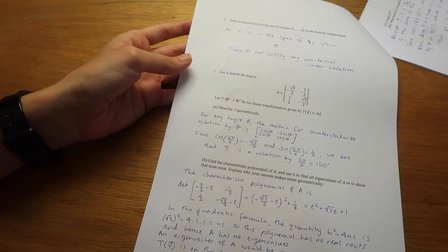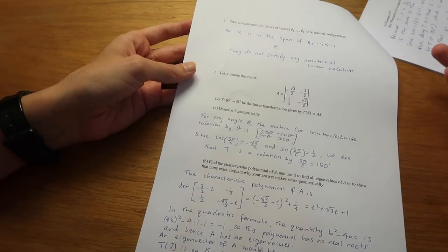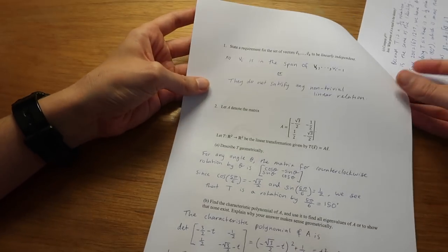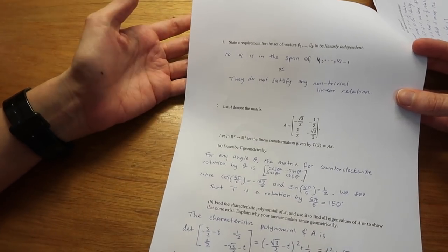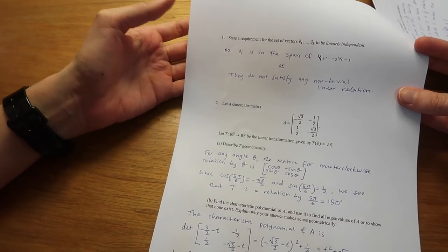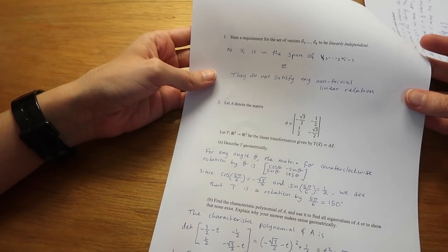First we're asked about the requirement for a set of vectors or lines to be linearly independent of each other, so to have no redundancy there when describing a system.